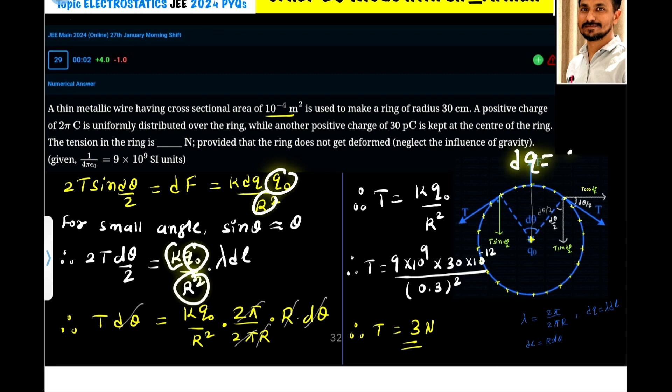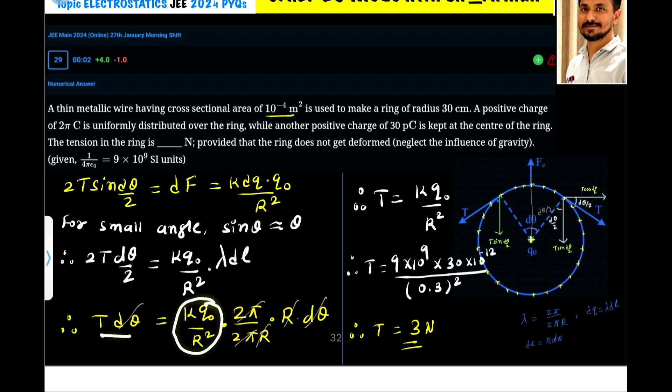Now dq, we can write it as λdL - that we discussed earlier. So it is a linear charge density. dq can be written as λdL. Now here 2 and 2 will get cancelled. So it is T dθ = K Q₀/R². Now λ is given in this question.